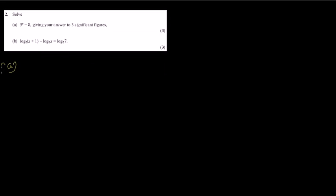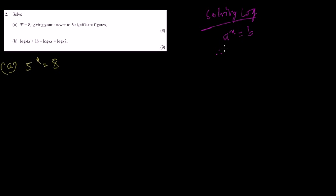In question number 2, this is a logarithm. Question 2a: 5 to the power x equals 8. The rule is: solving a log equation, a to the power x equals b, we need to find x. So x is going to be log base a of b. That's the formula. The next step is to change the base to common log: log b divided by log a.